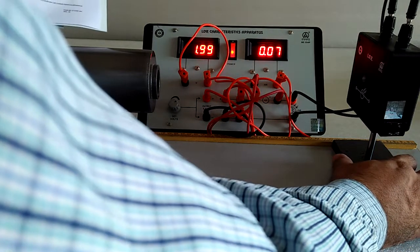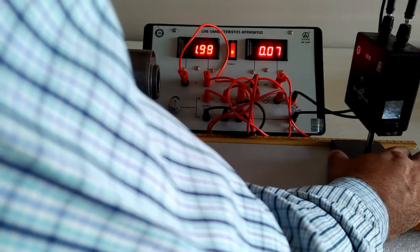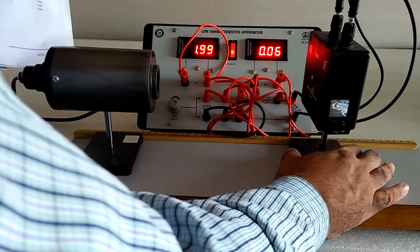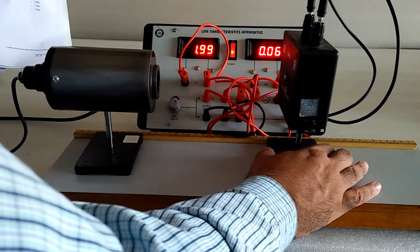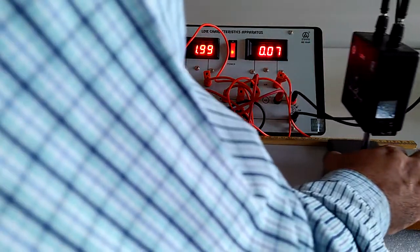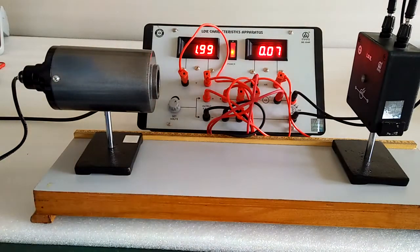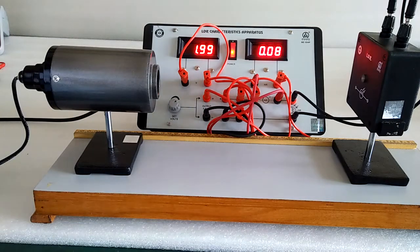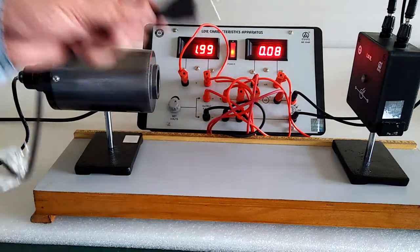Now decrease the distance. First, switch on the bulb and the 230-volt cable. Connect it.